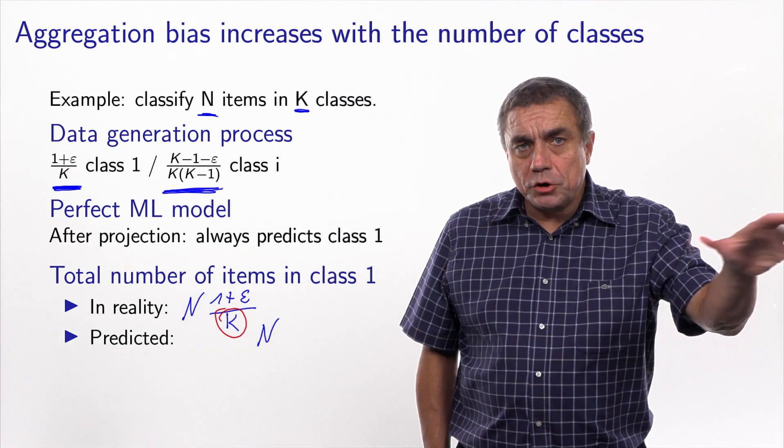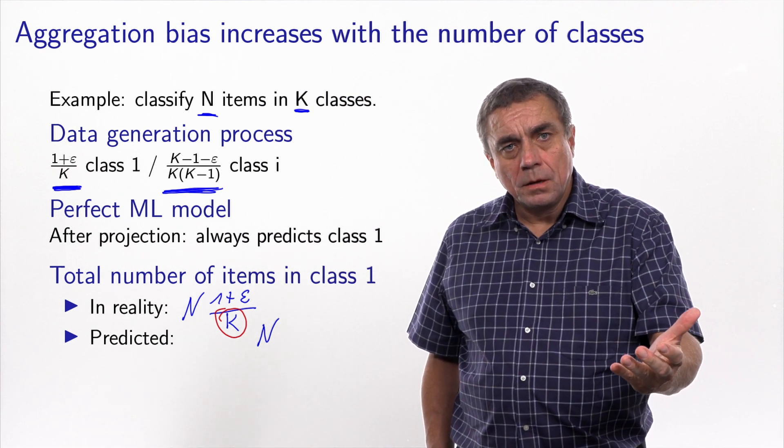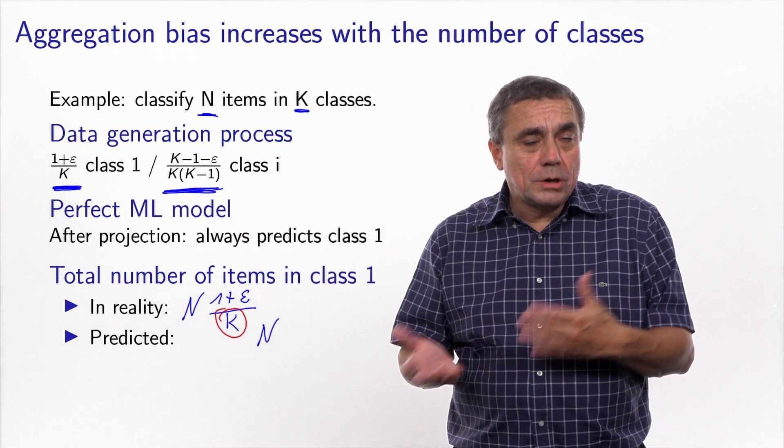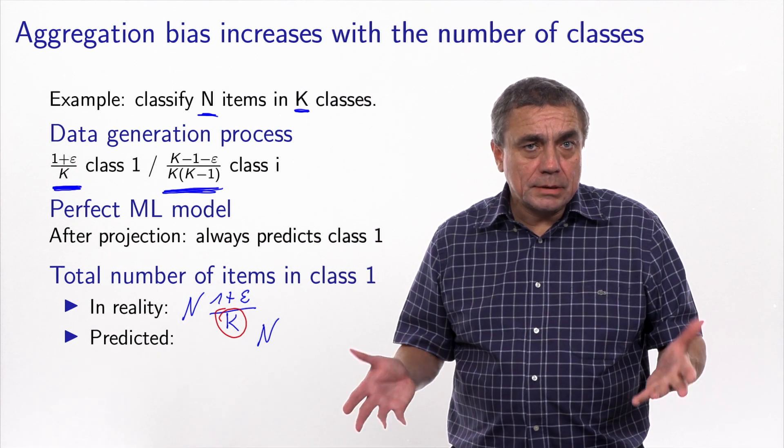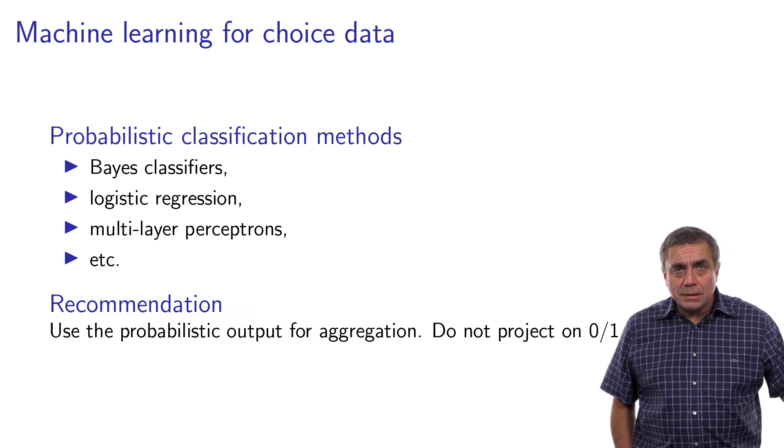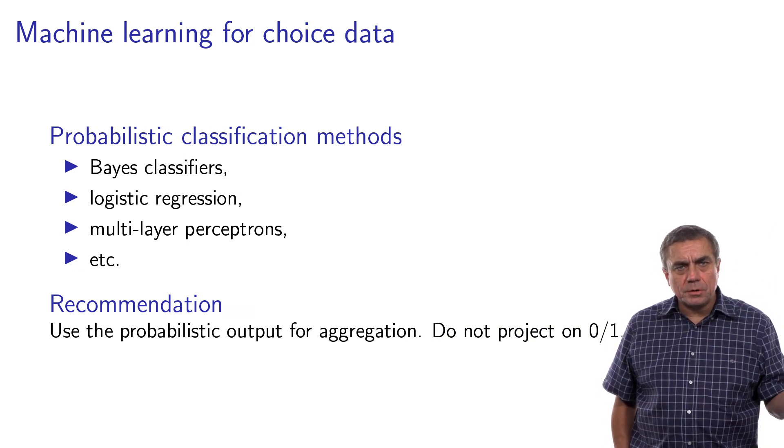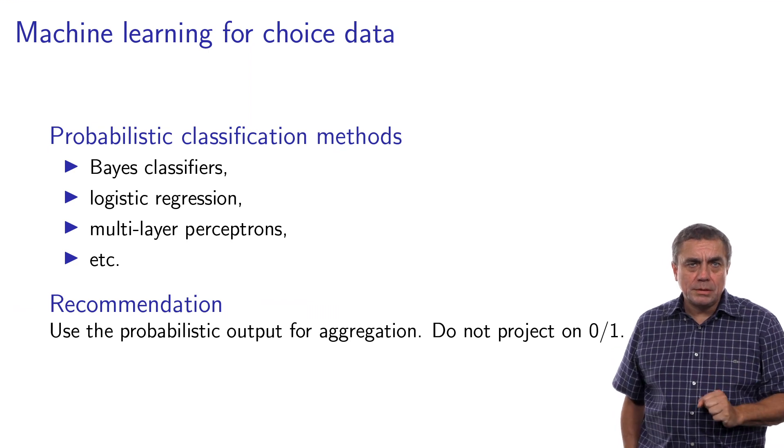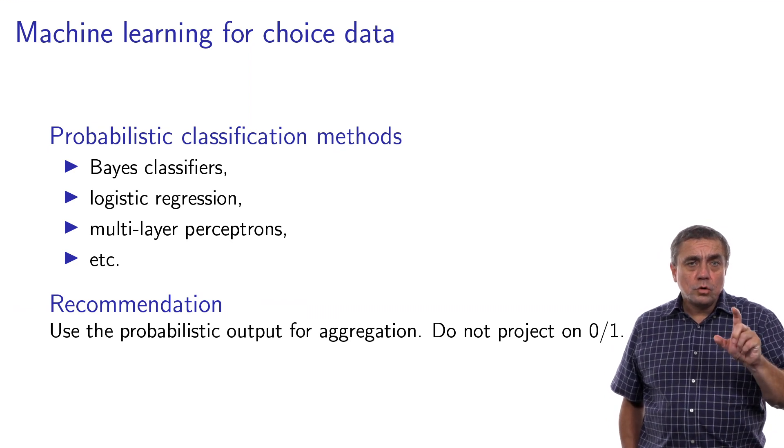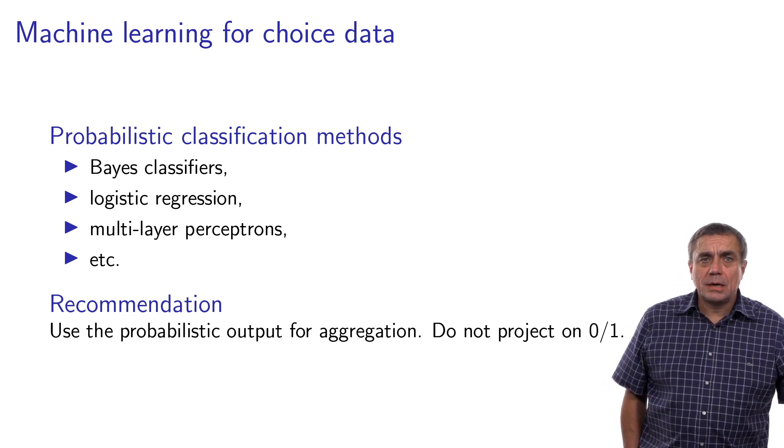So this idea of projection may be acceptable at the disaggregate level, if you have to do one classification. But we see in this example that when you aggregate the choices or the classifiers, you get a very significant bias that increases with the number of classes. So machine learning includes also probabilistic classification methods. There are a few: Bayes classifiers, logistic regression, multilayer perceptron. But the recommendation is that use the probability as an output for aggregation and not the projected zero one class membership.